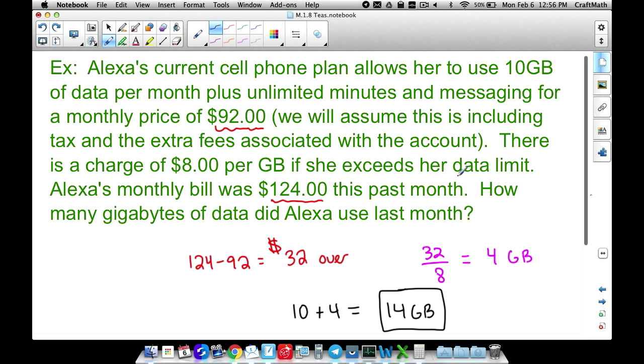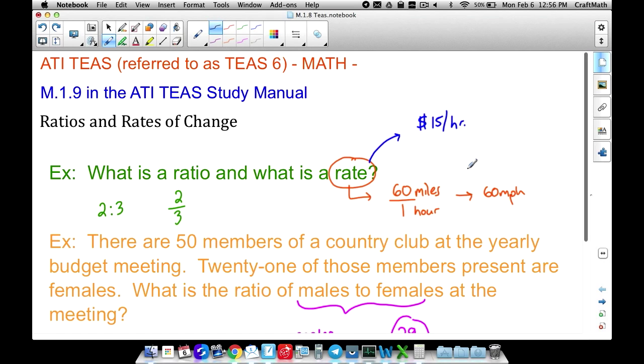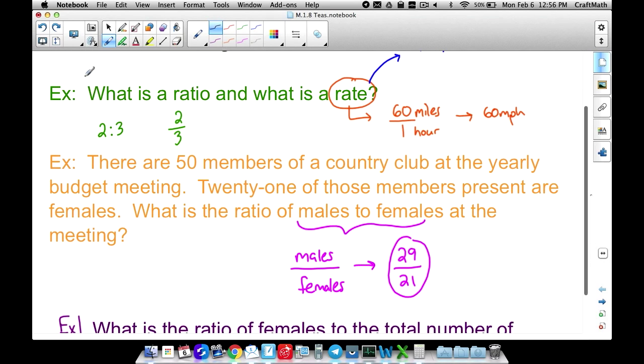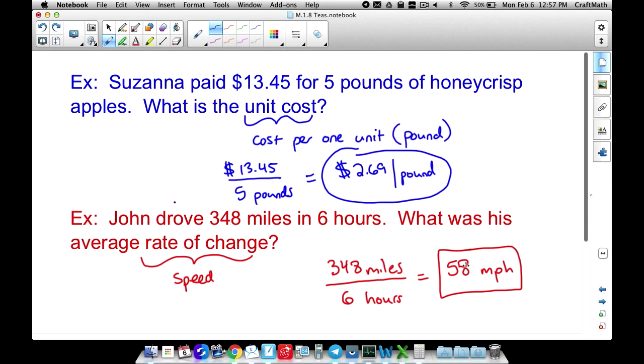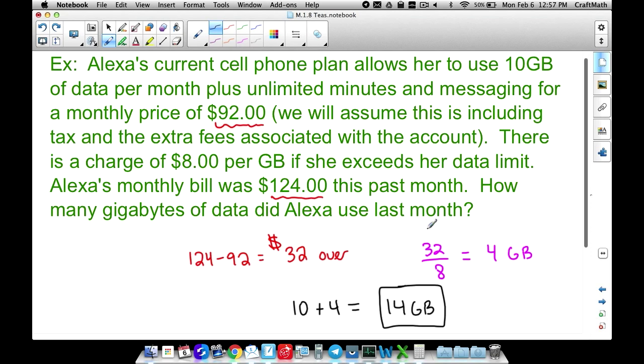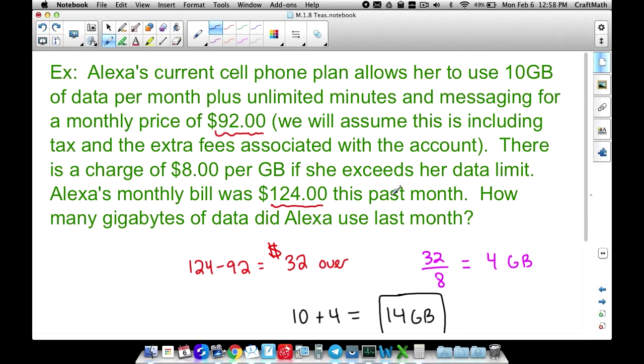So make sure you read these questions very, very carefully. Back here at the beginning, when we talked about the ratio of males to females, and in this case, females to the total number of people, making sure we understand unit rates, in this case, a unit cost. And this last example here, too, just making sure you read that question very carefully, because if the question did say, how many gigabytes did Alexa go over? She went over four gigabytes. But the question did say, how many gigabytes did she use? So that's the 10 plus the four. And there you have it. That's five examples that cover ratios and rates.